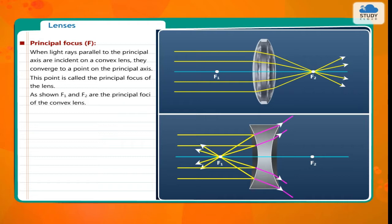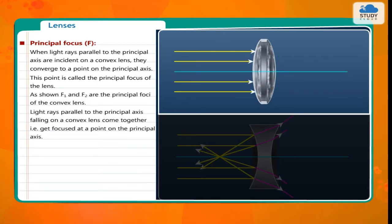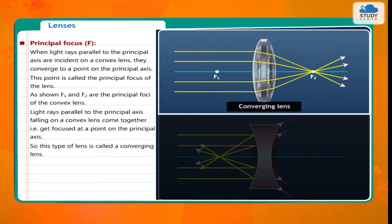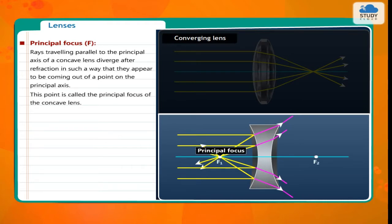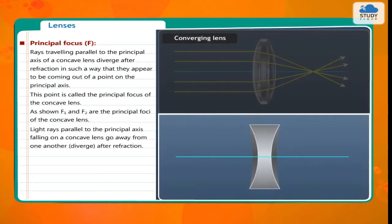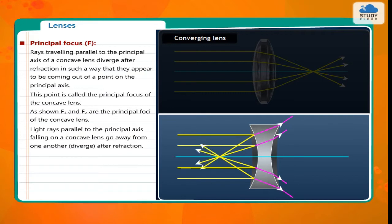As shown, F1 and F2 are the principal foci of the convex lens. Light rays parallel to the principal axis falling on a convex lens come together, i.e. get focused at a point on the principal axis. So this type of lens is called a converging lens. Rays traveling parallel to the principal axis of a concave lens diverge after refraction in such a way that they appear to be coming out of a point on the principal axis. This point is called the principal focus of the concave lens. As shown, F1 and F2 are the principal foci of the concave lens. So this type of lens is called a diverging lens.